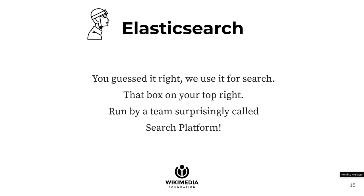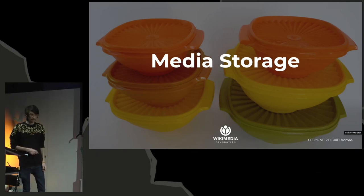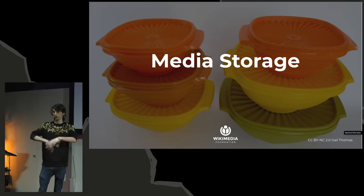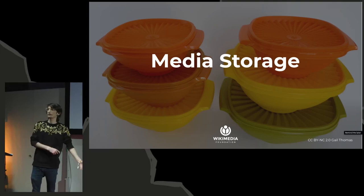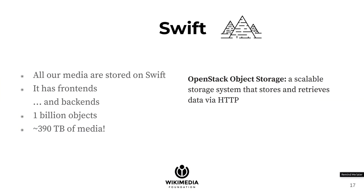We also have Elasticsearch for search, run by a separate Search Platform team. For media storage, we use Swift — the object storage component of OpenStack — to store all the free images uploaded to Wikimedia Commons. Commons is our wiki for all free media; we even have categories like 'Cats looking left' and 'Cats looking right.' It's 390 terabytes of media, 1 billion objects, with several layers of caching front-end and back-end.